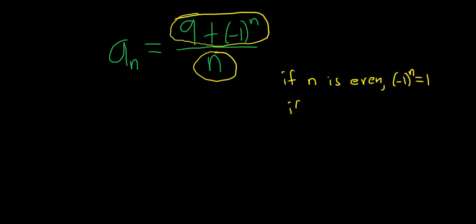If n is odd, you get negative 1 to an odd power, so that's always negative 1. So you're adding 9 to it in both cases. So if n is even, you get 9 plus 1, so you get 10.